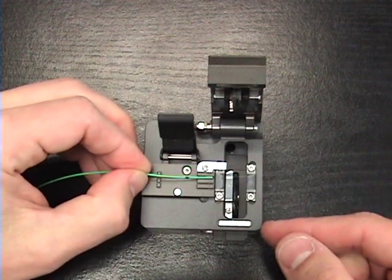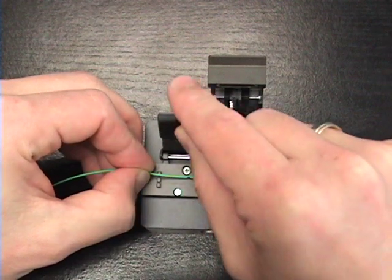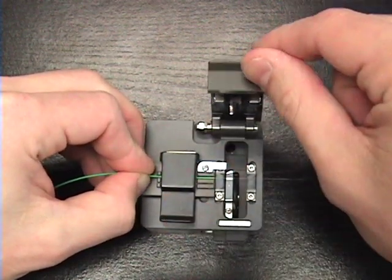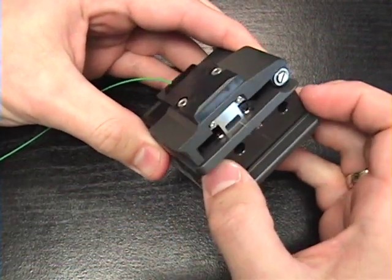Set the fiber down so that the edge of the 900 micron coating is at the 10.5 to 11 millimeter mark. Then you can close both flaps and slide the blade back to cleave the fiber.